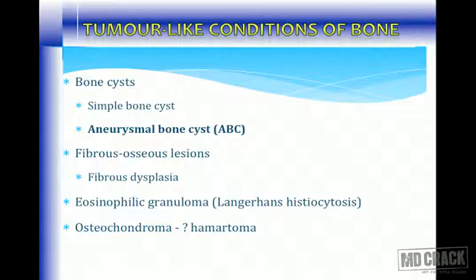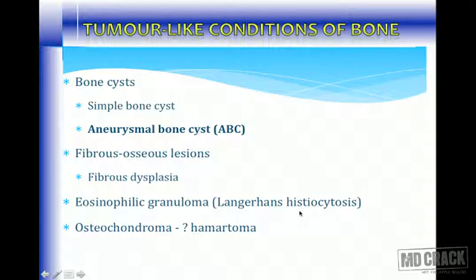Tumor-like conditions of the bone are not true tumors but tumor-like lesions. These include simple bone cyst, aneurysmal bone cyst (ABC) — very common, known for extensive hemorrhage and giant cells — fibrous dysplasia (fibroosseous lesion), eosinophilic granuloma (a type of Langerhans histiocytosis, which can turn aggressive), and osteochondromas, which probably represent hamartomas with excessive growth of the cartilaginous component.